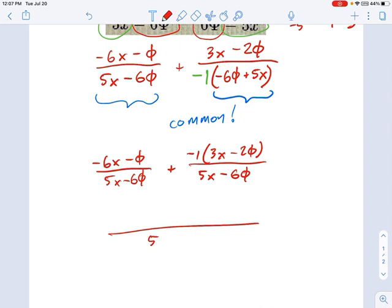There wasn't any foiling necessary. 5x minus 6 phi. And we just group up our terms on top. I've got a negative 6x over here, negative 3x over there. So that makes negative 9x.